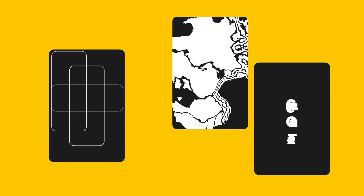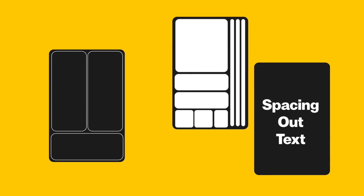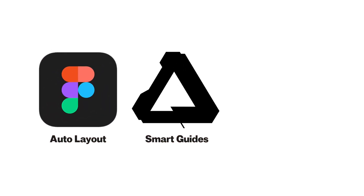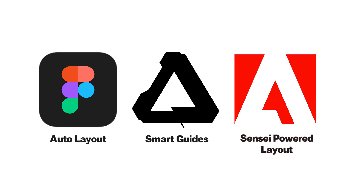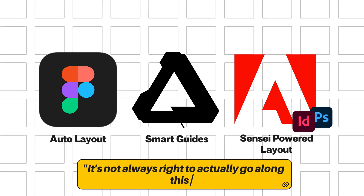One of the most time-consuming aspects of design is arranging layouts, aligning elements, spacing out text, and making sure everything looks visually balanced. Traditionally this was done manually, where each asset or design object is worked on at a time. Tools like Figma's Auto Layout, Affinity 2's Smart Guides, and Adobe Sensei-powered layouts in Photoshop and InDesign allow us to automate layouts when the time is right.